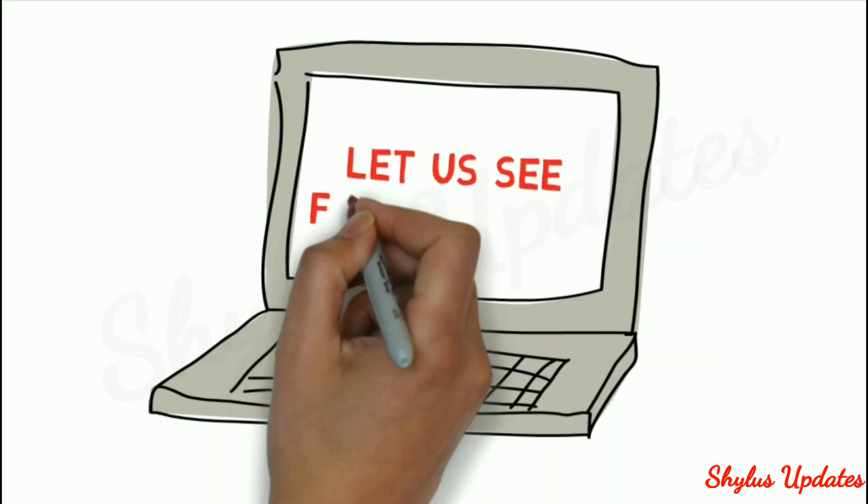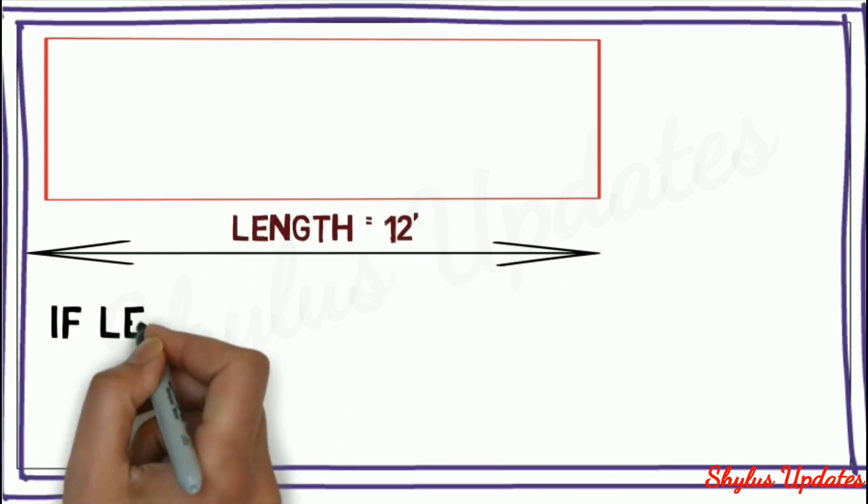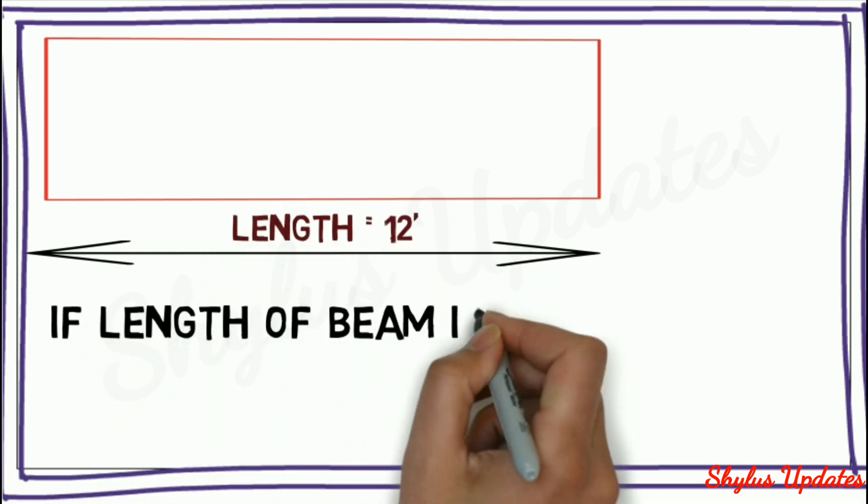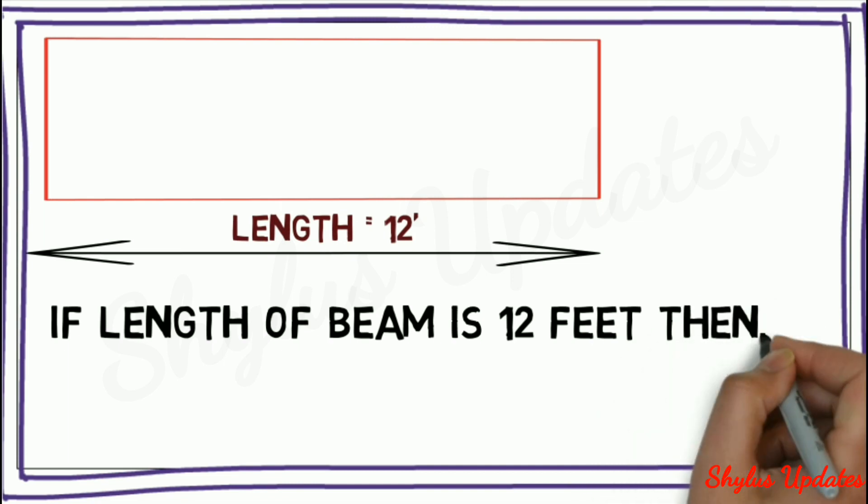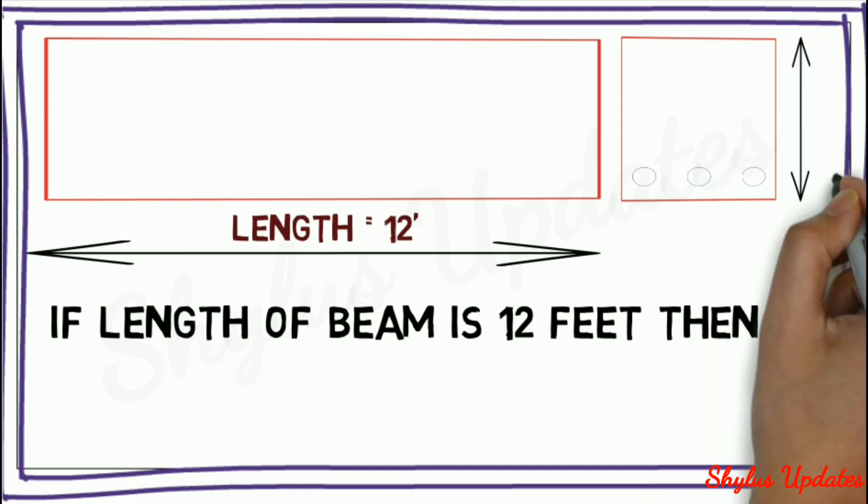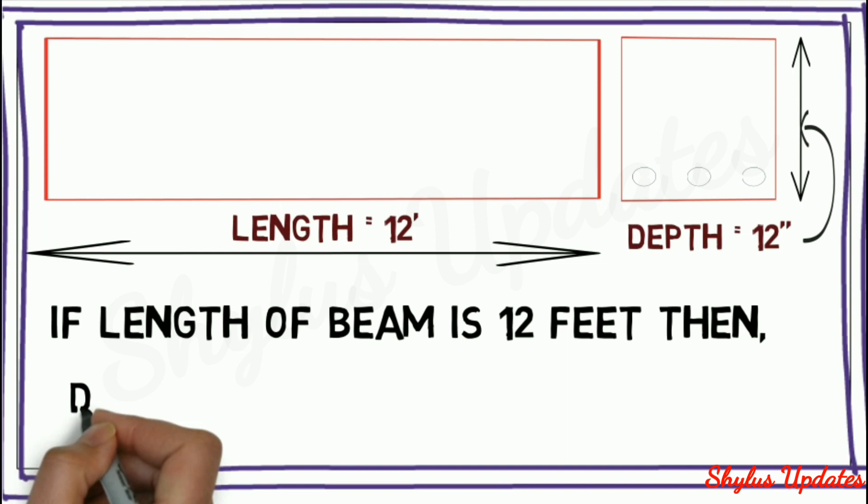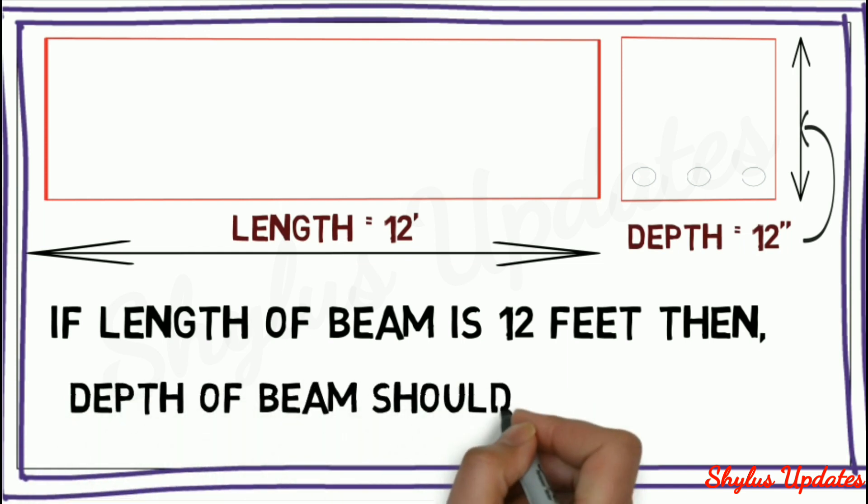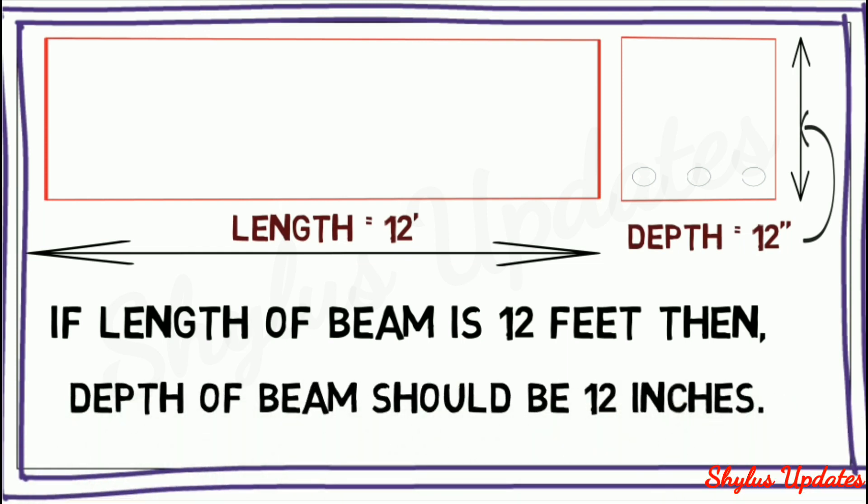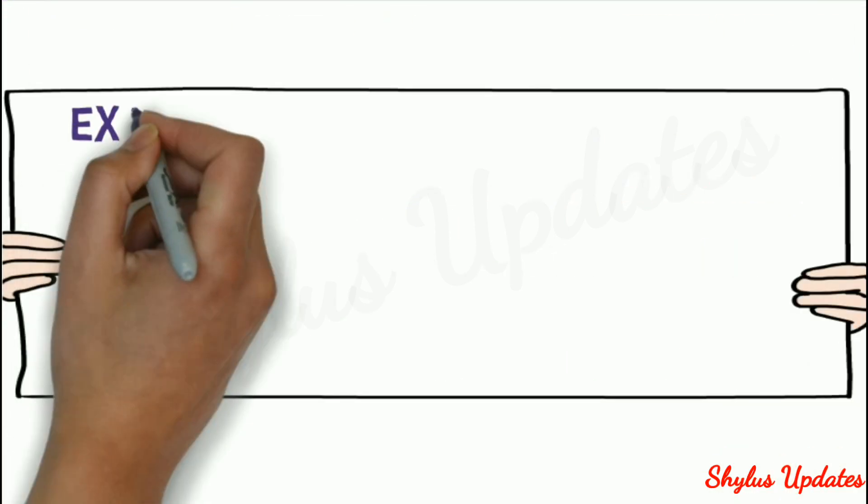Let us see a few examples. If length of beam is 12 feet, then depth of beam should be 12 inches. Example 2: